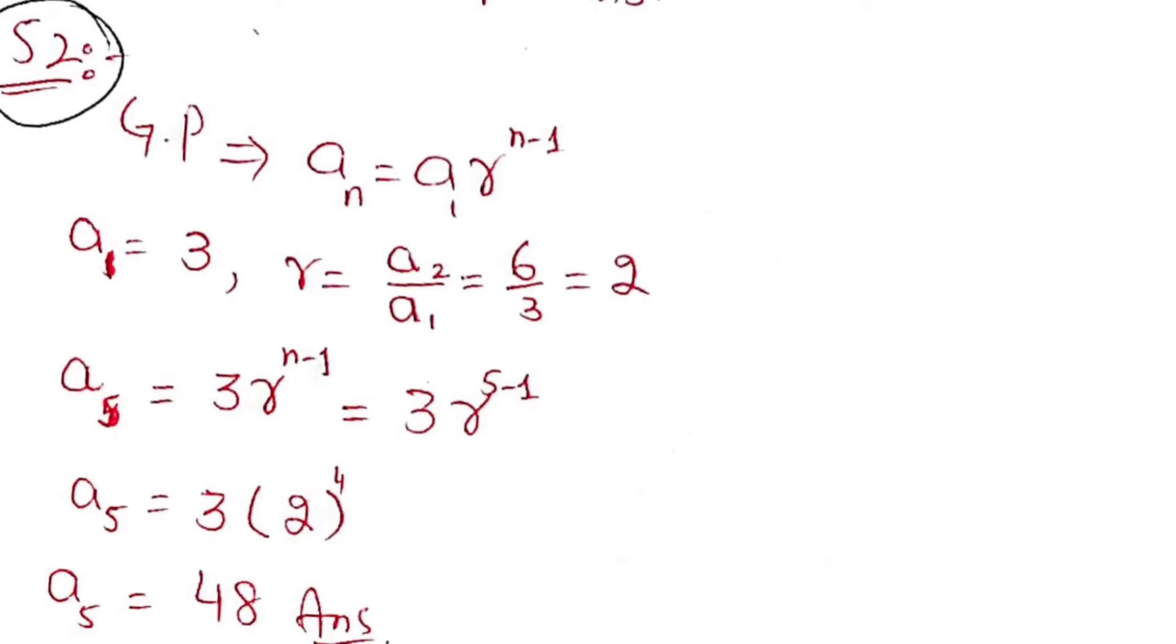Now question 52. The geometric progression general formula is AN equals A1 times R to the power N minus 1. Basically R is the ratio of the Nth term to the N minus 1 term. So we found the ratio is 2 and the answer of the fifth term is 48.